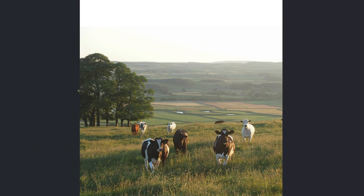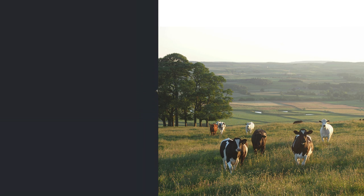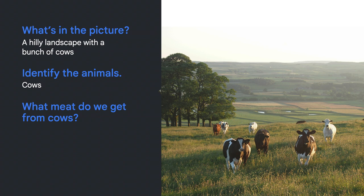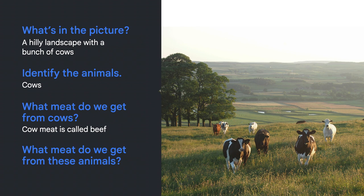For example, imagine seeing an image and wanting to learn: what meat do we get from these animals? To answer this, you first figure out what's in the picture — a hilly landscape with a bunch of cows. Then you understand the question and identify the animals referenced. Since they are all cows, you determine the right answer: cow meat is called beef. Finally, you generate the correct answer — beef.